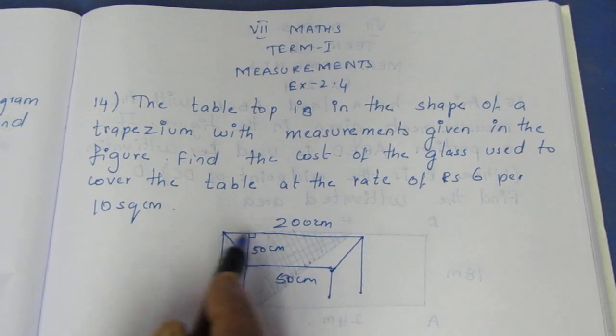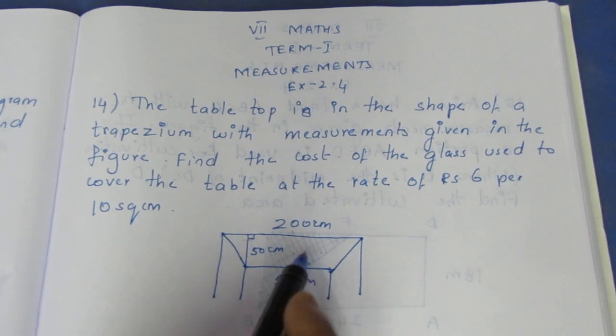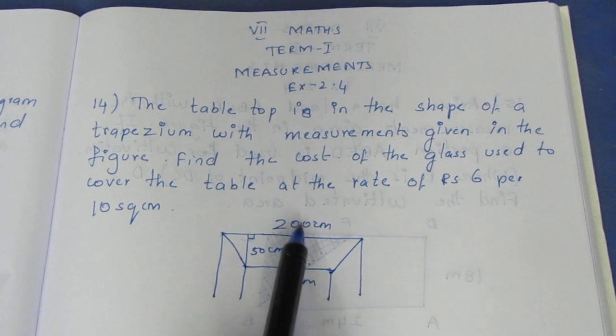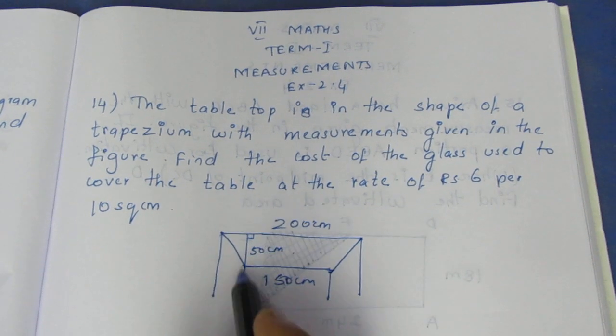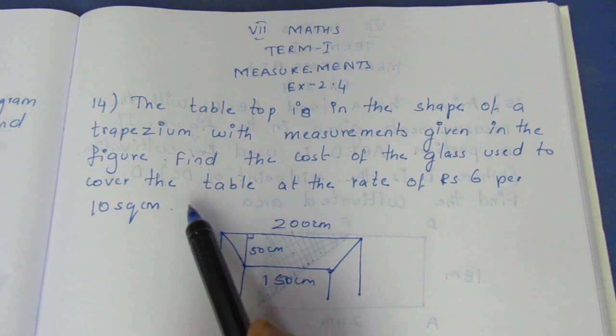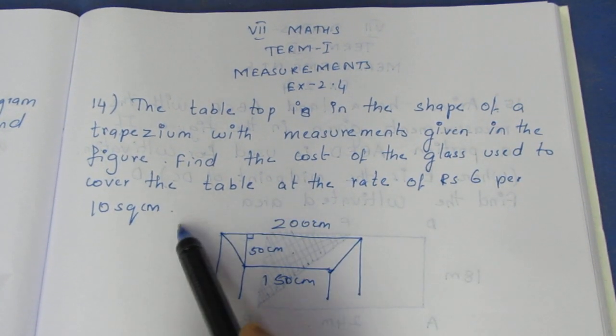The question reads: A table top is in the form of a trapezium with the measurements given in the figure. The parallel sides are 200 and 150, and height is 50. Find the cost of the glass used to cover the table at the rate of Rs. 6 per 10 square centimeter.